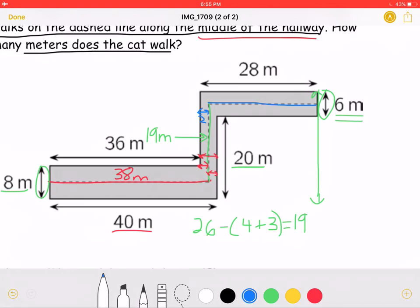So in order to find the length of the blue part, we must take 28 meters and subtract 2, getting a total of 26 meters.